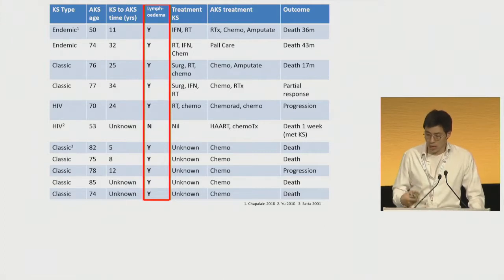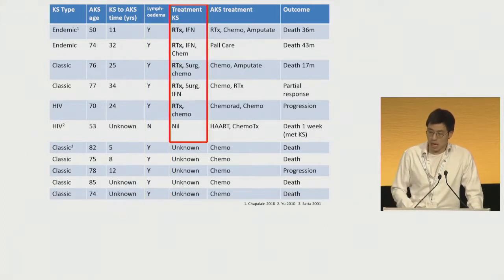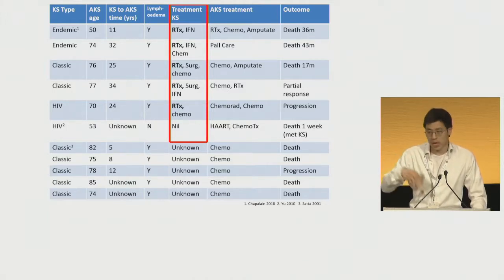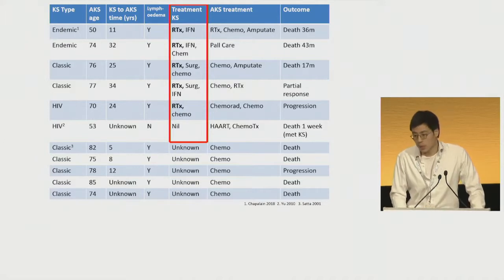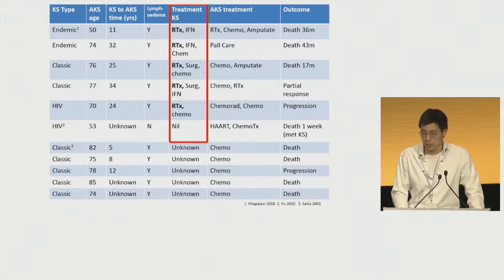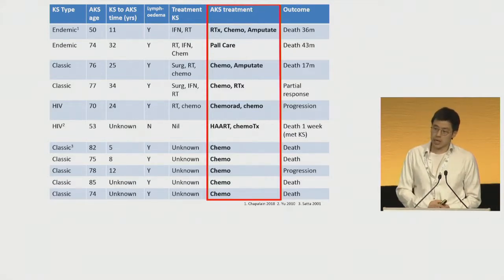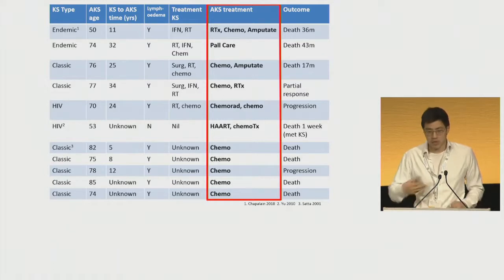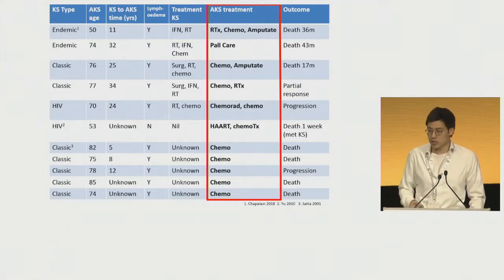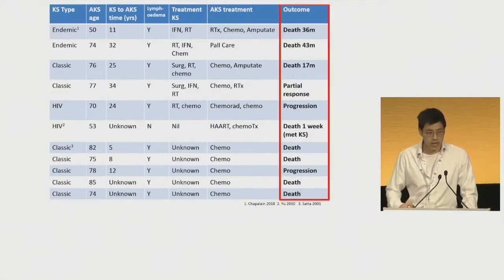The vast majority have a background of lymphedema. The treatment prior to the development of anaplastic KS shows that the majority of these patients have had radiotherapy. In terms of their anaplastic KS, a number of different treatment modalities have been tried, including radiotherapy, chemotherapy, and even more extreme measures such as amputation. Despite all this, a lot of these cases pass away quite rapidly, making this a very serious, life-threatening condition.